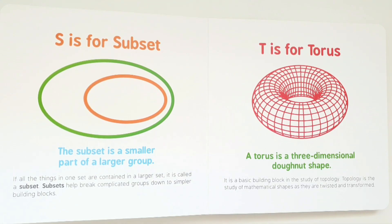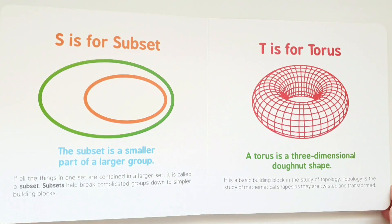T is for torus. A torus is a three-dimensional donut shape. It is a basic building block in the study of topology. Topology is the study of mathematical shapes as they are twisted and transformed.